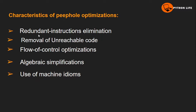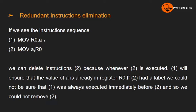The five characteristics are: redundant instruction elimination, removal of unreachable code, flow of control optimization, algebraic simplifications, and use of machine idioms. We will discuss each one by one. The first characteristic is redundant instruction elimination. For example, consider two statements: the first is MOV R0, A and the second is MOV A, R0.